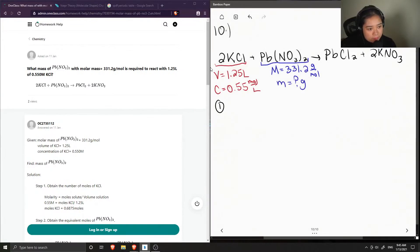So step one is to first find the number of moles of potassium chloride. So we do that by multiplying our concentration and our volume. So the concentration was 0.55 moles per liter and the volume was 1.25 liters. So this cancels out our liters and tells us that we have 0.688 moles of potassium chloride.